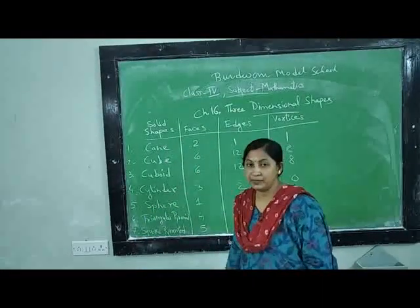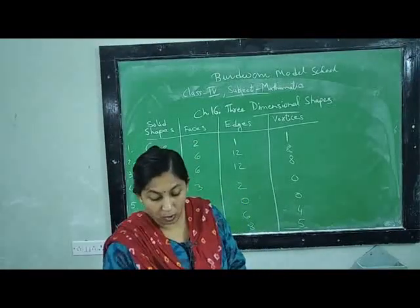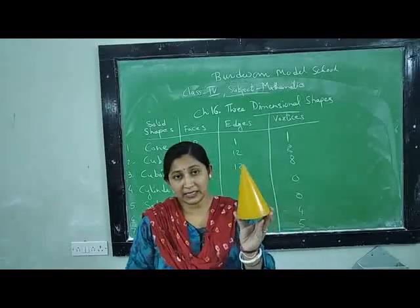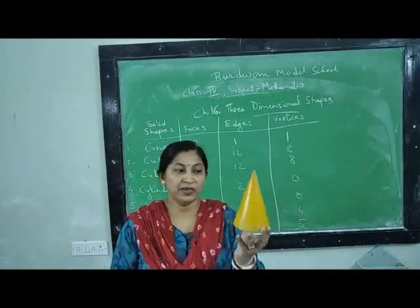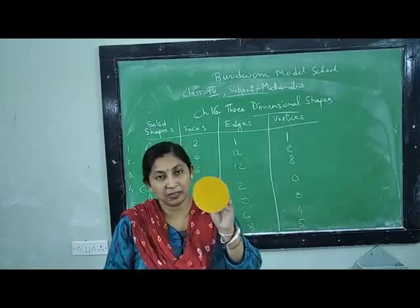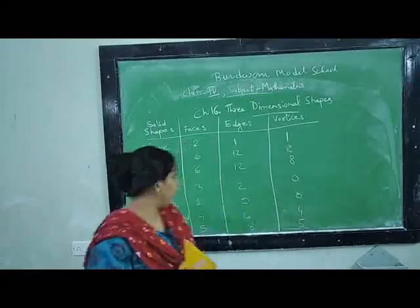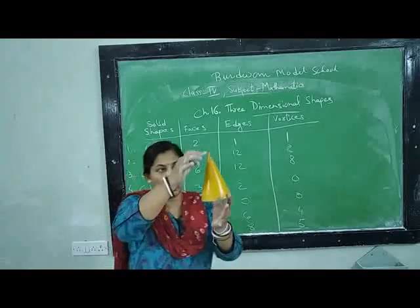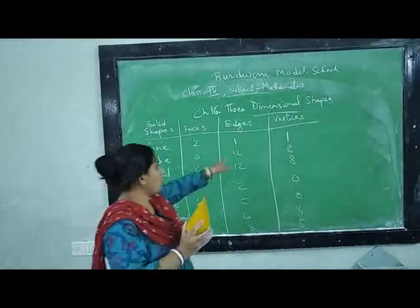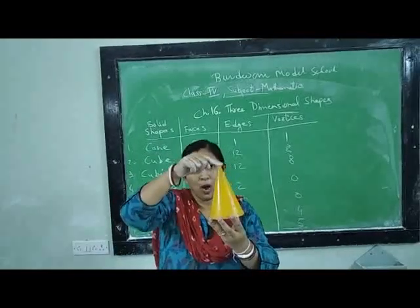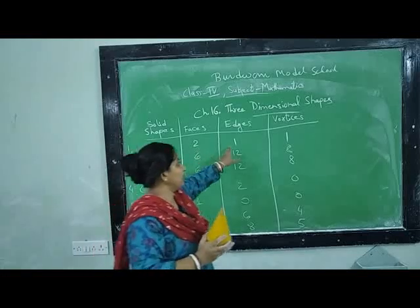I have written on the board the solid shape names, and how many edges, faces, and vertices they have. First, this one is the cone. A cone has two faces — one is the curved face and one is at the bottom, that is the flat face. The cone has only one edge and one vertex, that is the top corner. So cone has two faces, one edge, and one vertex.